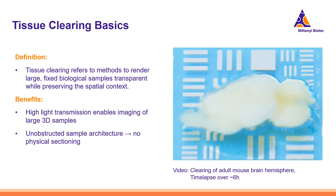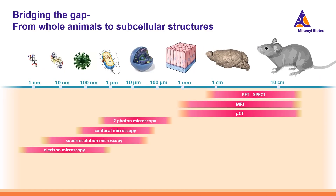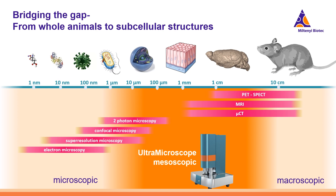To determine the most suitable imaging approach, we need to assess the capabilities of different microscopy techniques. It is crucial to consider the size range of the sample we wish to image and match it with the proper imaging technique. For example, single molecule imaging requires nanometer resolution, while imaging an entire organism requires resolution in the millimeter or high micrometer scale. This is where tissue clearing and light sheet microscopy come into play, bridging the gap between various imaging techniques and allowing for large-scale imaging at cellular or even subcellular resolution.